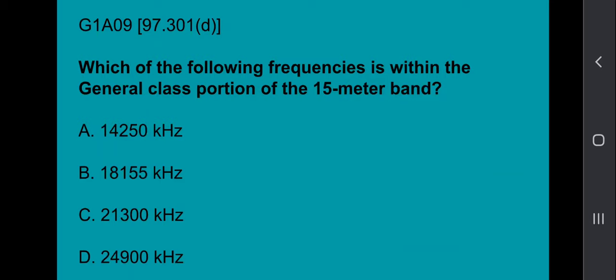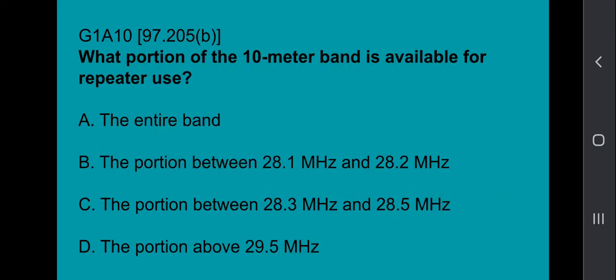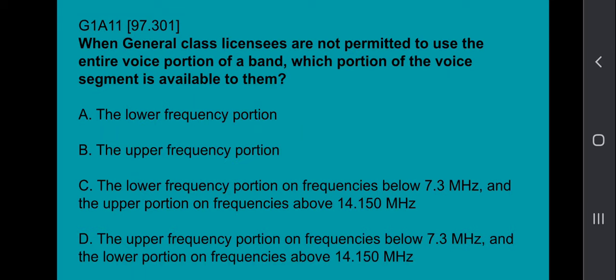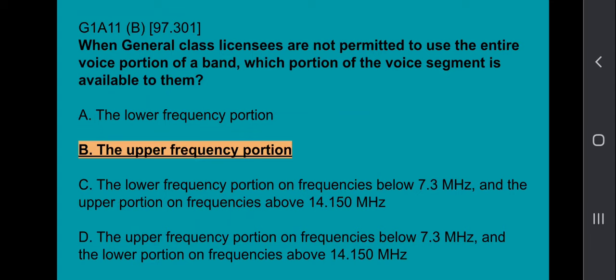G1A09: Which of the following frequencies is within the general class portion of the 15-meter band? 21,300 kilohertz. G1A10: Which portion of the 10-meter band is available for repeater use? The answer is the portion above 29.5 MHz. G1A11: When general class licensees are not permitted to use the entire voice portion of a band, which portion of the voice segment is available to them? The answer is the upper frequency portion.